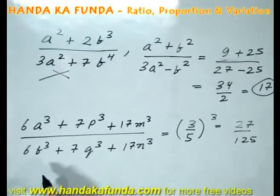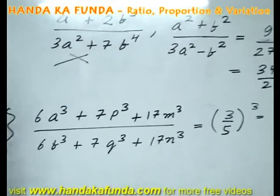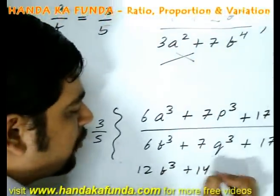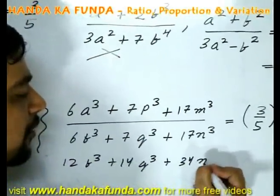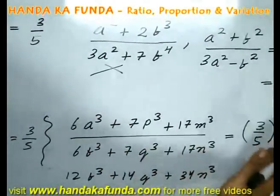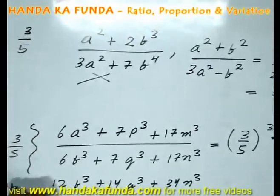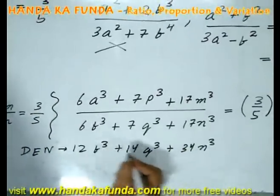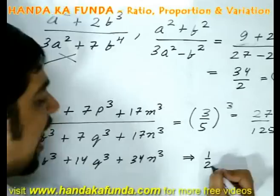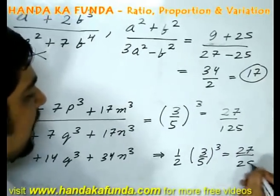A variation of this might exist, that instead of 6B cube, 7Q cube and 17N cube, you might have had 12B cube, 14Q cube and 34N cube. What will you do in that case? Just take 2 common and once again you will be left with this. Once again you can find out the answer. So if my denominator was 12B cube, 14Q cube and 34N cube, my answer would have been half of 3 by 5 whole cube or 27 by 250.